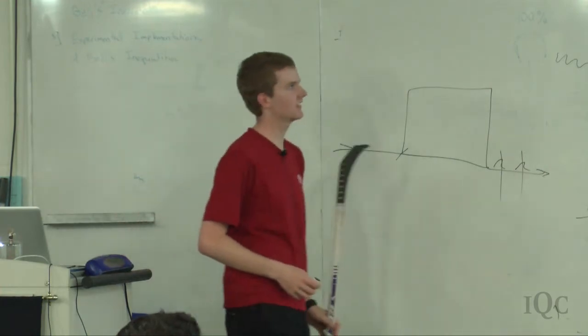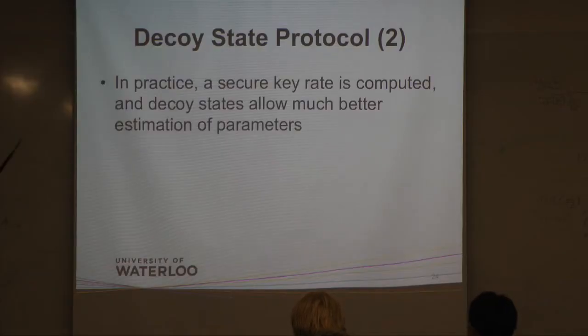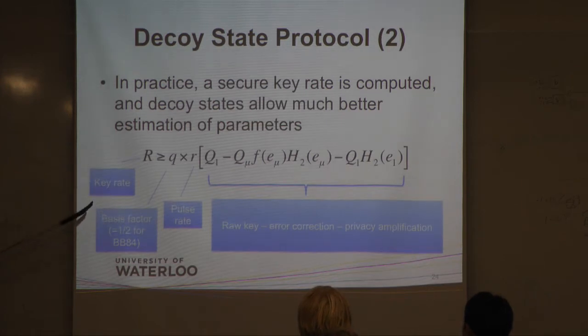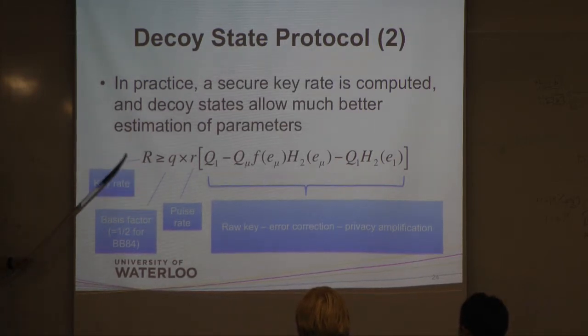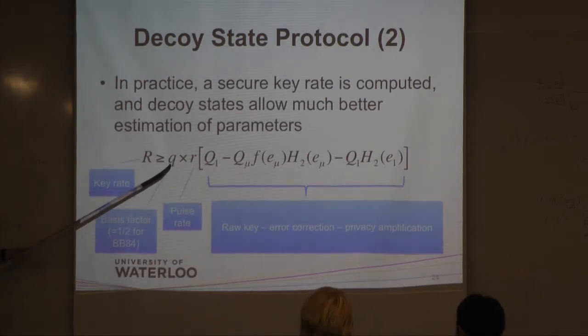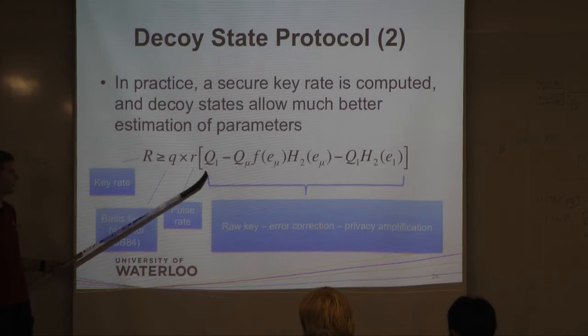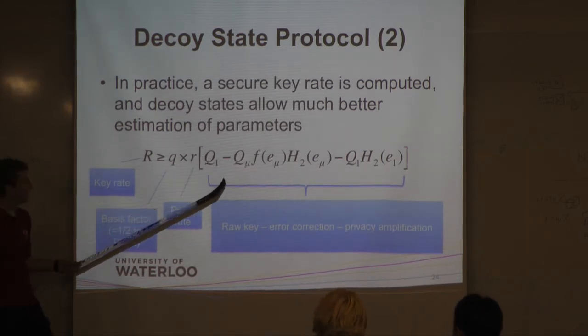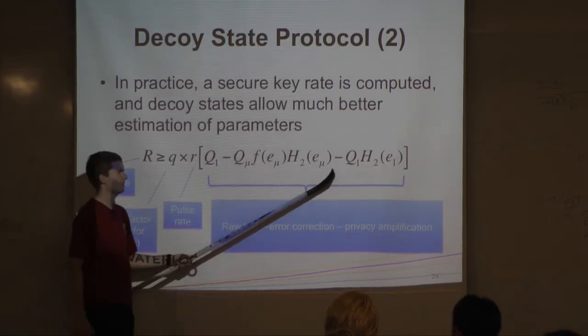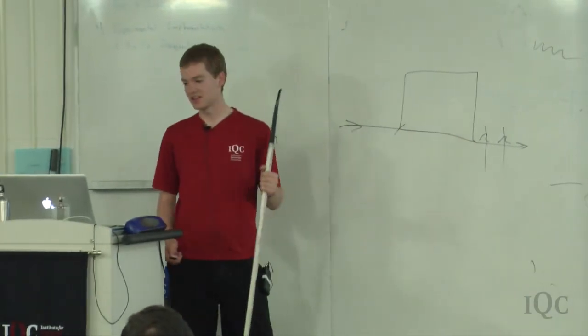So the decoy state protocol allows us to detect Eve doing this photon number splitting attack. And so we use lasers, which is great because they're really fast and really easy to use. So in practice, we don't actually say, oh, there's an eavesdropper, we better stop. We compute a secure key rate. This is mathy, lots of security proofs. But in the end, all you want is this R to be greater than zero. As long as the R is greater than zero, you know you have enough information beyond the eavesdropper to say, I can generate some secure key. So essentially, what goes into it? Well, there's the basis factor. We have to throw away half of our results because the basis is going to be wrong. Then there's the pulse rate, so how fast you're actually shooting your laser. And then this is the raw key, so how many clicks Bob actually gets. Then minus the information that's leaked to Eve from error correction and minus the information that they have to do for privacy amplification. So in practice that's how we actually compute whether we can generate a secure key.